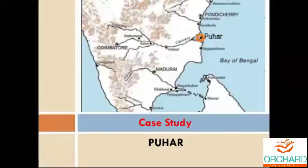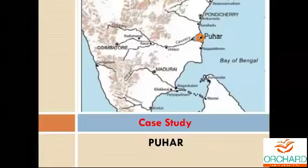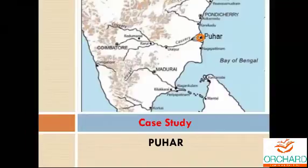Next, we are going to see about Puhar. You would have heard about this word — it is also known as Pumbuhar. It is a town in Mayiladuthurai district in the southern Indian state of Tamil Nadu. It was once a flourishing ancient port city known as Kaveri Pattanam. Now it is called Puhar, but in olden days it was called Pumbuhar. It was considered an ancient port city which served as the capital city of the early Chola kings.